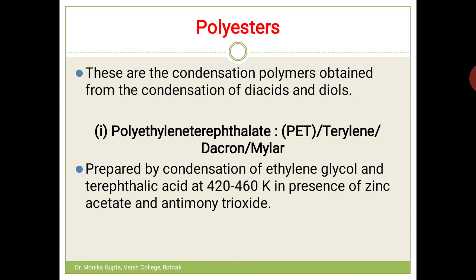In polyamides, diamines are used; here diols are used — diacids are common to both. The first polyester is polyethylene terephthalate, or PET. It is also called Terylene, Dacron, and Mylar — these are all trade names.